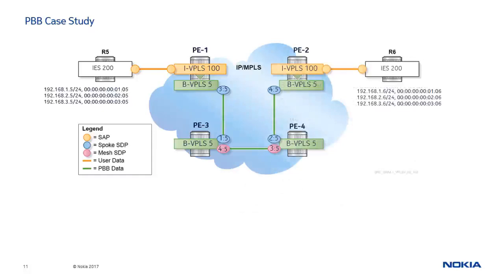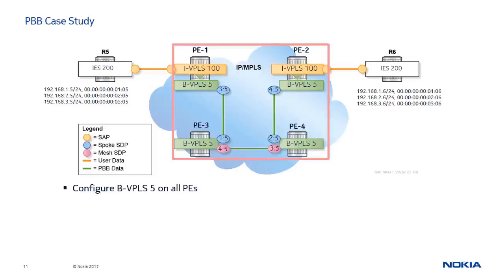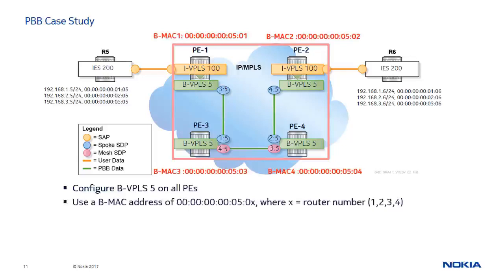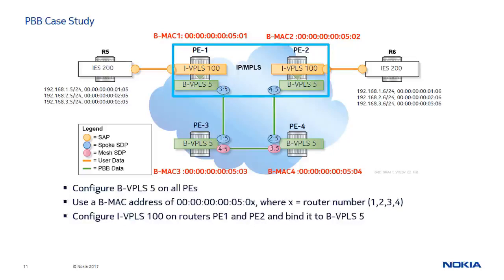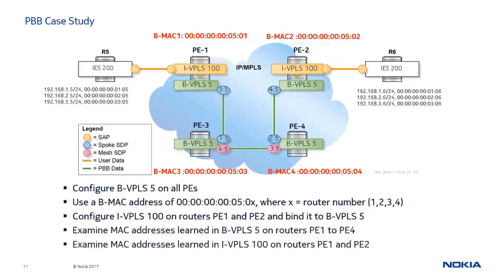Next, we will move to our lab to complete this case study. Routers 1 to 4 are the PE devices and routers 5 and 6 are the CE devices. The MAC addresses on the IES interfaces on routers R5 and R6 simulate customer MAC addresses. We will use PBB to reduce the FDB size and the number of MAC learning and relearning in the core PEs. To accomplish this, we will first configure a BVPLS on all PE routers and assign a BMAC address where the last digit equals the router number. Next, we will configure an IVPLS on routers PE1 and PE2, which are connected to the customer network. And finally, we will examine the MAC addresses learned in the BVPLS and the IVPLS.